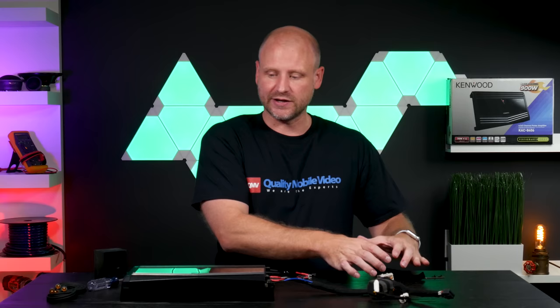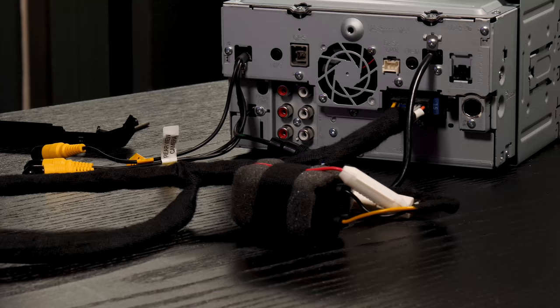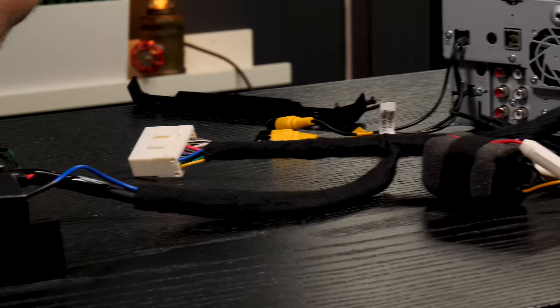To better visualize, we'll grab a radio, imagine that we're plugging into your car, and we'll run our RCAs. Since we've only run our front channels from our amplifier to our factory harness, all we'll need to do is connect the front RCAs.